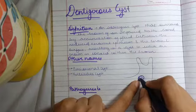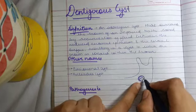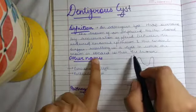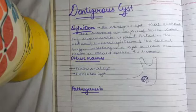The lumen of the cyst has the crown of the tooth. That is what I was talking about in the last line of the definition.